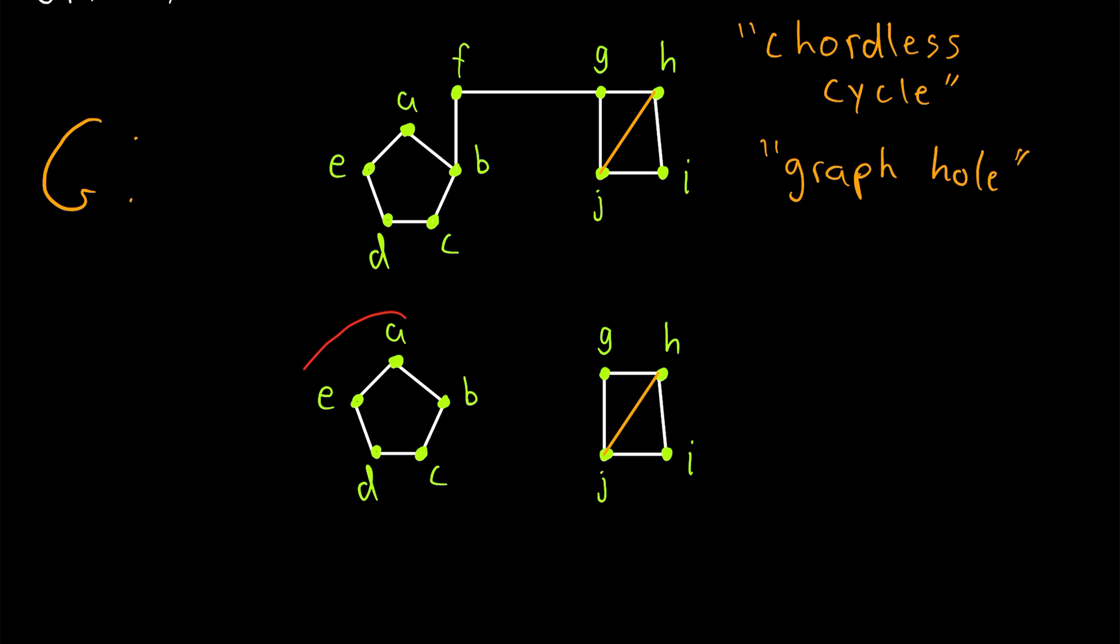So the point to take away here is that the subgraph induced by the vertices of a chordless cycle, or induced by a cycle of length three, will be a cycle graph.